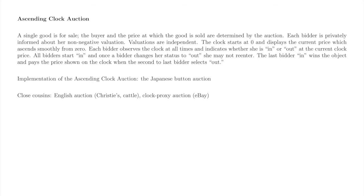eBay and others run a clock proxy auction in which each bidder inputs the price at which she would drop out, and eBay increments the clock price and who is still in accordingly. This auction is called a proxy auction because eBay does the actual bidding on behalf of every bidder.